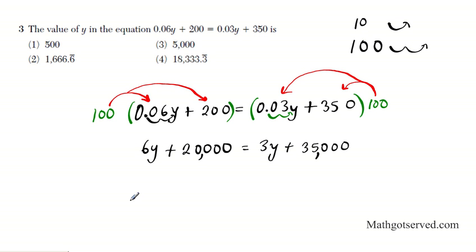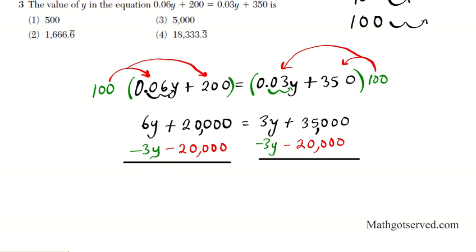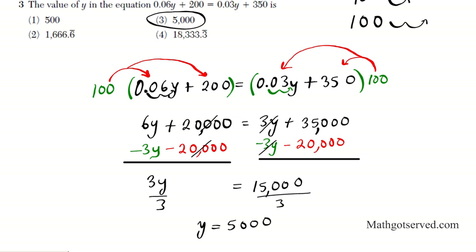To solve this, all I need to do is collect all the y's to one side, and all the constants to the other side. To accomplish that, we're going to use opposites. There's a positive 3y here, I'd like to move it over here, subtract 3y from both sides. And then I want to move this 20,000 to the right side, subtract 20,000 from both sides. I'm doing two steps simultaneously. On the left side, if you combine these two, you have 3y. On the right side, 35,000 minus 20,000, that's 15,000. Divide both sides by 3. And your final answer, y equals 5,000. And that is option number 3.